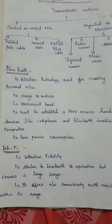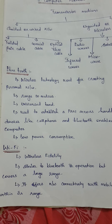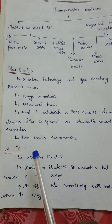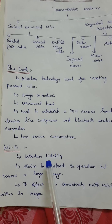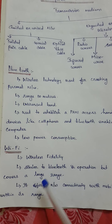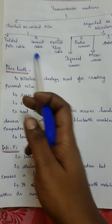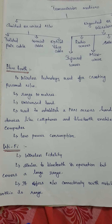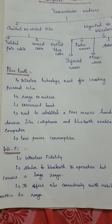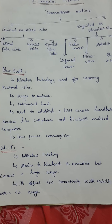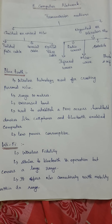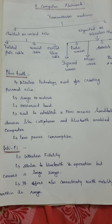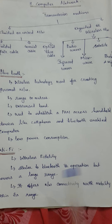Wi-Fi stands for Wireless Fidelity. The operations performed in Wi-Fi are similar to Bluetooth, but the key difference is that Wi-Fi covers a much larger area — whereas Bluetooth has a range of only 10 meters, Wi-Fi can cover a significantly larger area. Wi-Fi also offers network connectivity with mobility, meaning you can move around freely within its range.